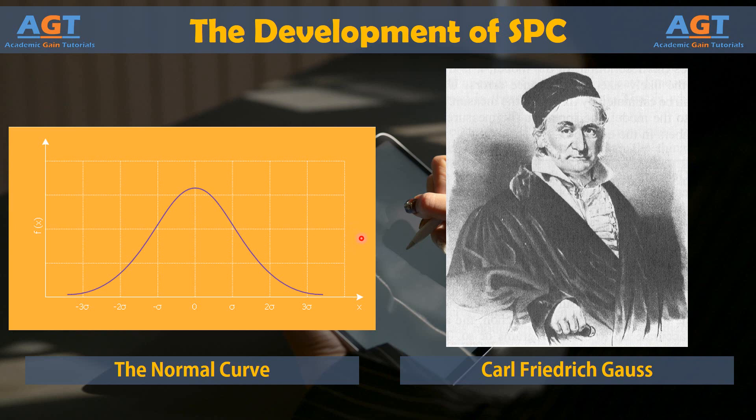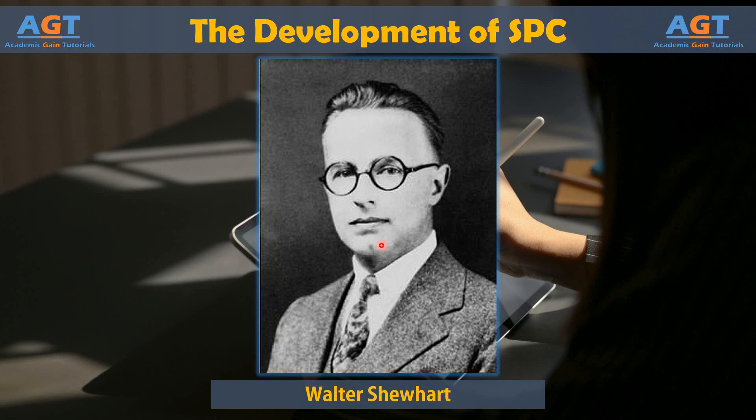In the early part of the 20th century, statistical process control received another big boost thanks to contributions from an engineer and scholar named Walter Shewhart. Shewhart's contributions to quality are many, but two specific ideas stand out. First, Shewhart was the first person to closely relate Sigma level and quality.